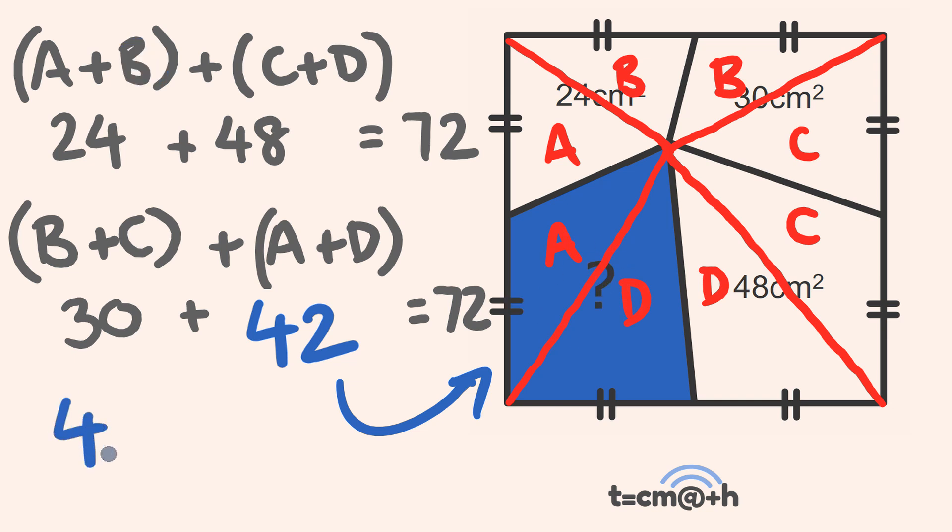Our answer is the unknown section is 42 centimeters squared. It's a great little solution, right? It's a really, really deceptively simple little problem to work out, but I think it's a really, really good one. So that's how you go through and solve it.